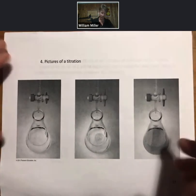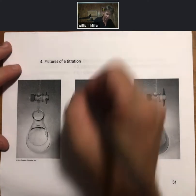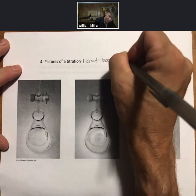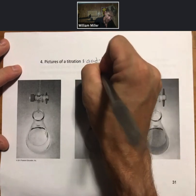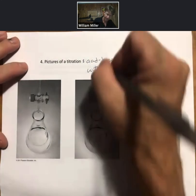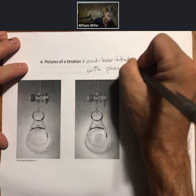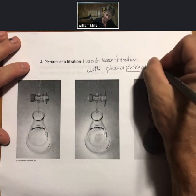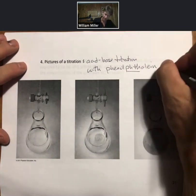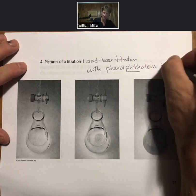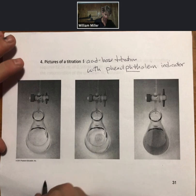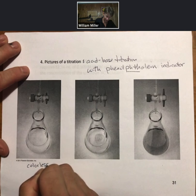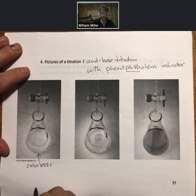Pictures of a titration. Here we have an acid-based titration with phenolphthalein indicator. Phenolphthalein has the famous PHTH construction - silent PH there. I know this leaves a little bit to be desired in black and white, but we'll go with it anyway. So this is colorless, which means the solution is acidic.